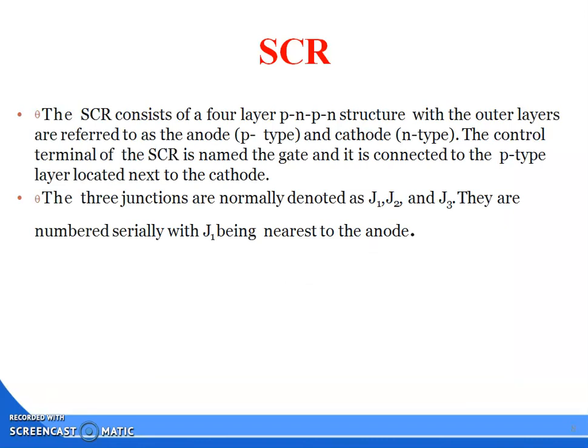The SCR consists of four layers PNPN structure. The outer layers are referred to as the anode P-type, cathode, and the control terminal. The control terminal of SCR is named the gate and it is connected to the P-type layer located next to the cathode.